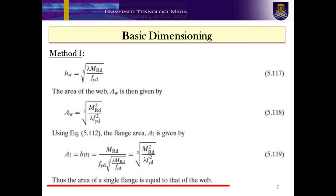To calculate the height of the web, you can apply Equation 5.117. The area of the web can be calculated using Equation 5.118. Substituting Equation 5.112 into Equation 5.118, the flange area is given by Equation 5.119. In Method 1, when calculating the basic dimensioning, the area of a single flange is equal to that of the web.